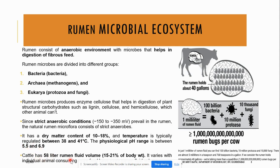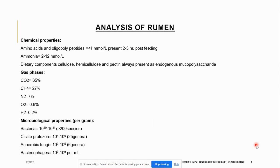Cattle have 58 liters of rumen fluid volume. One milliliter of rumen fluid contains a large number of bacteria, protozoa, and fungi. Here we can see the amount of these microbes present in the rumen.